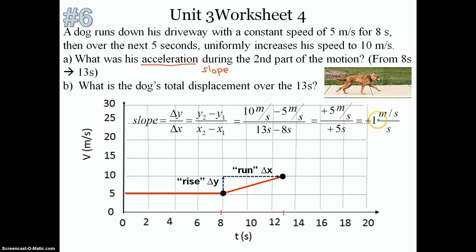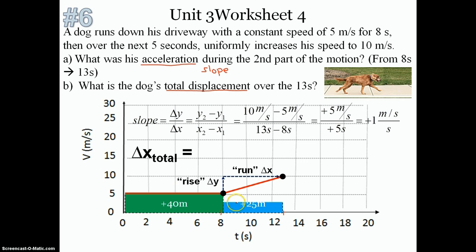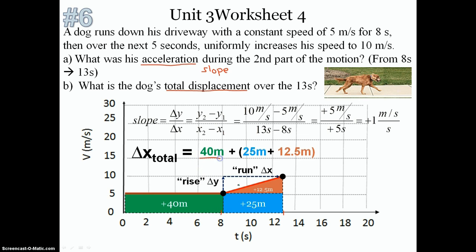When finding total displacement over the 13 seconds graphically, we shade in the area under the line. The first part of the motion gives one area, and the second part gives additional areas. To find total displacement, we add up all areas: a rectangle for the first 8 seconds plus a rectangle and a triangle for the next 5 seconds. The first 8 seconds gives 40 meters; the rectangle below gives 25 meters; the little triangle gives 12.5 meters. So total displacement is 40 plus 25 plus 12.5, which equals 77.5 meters.